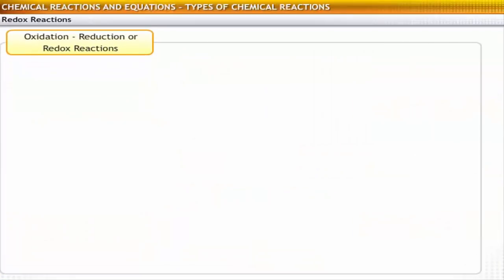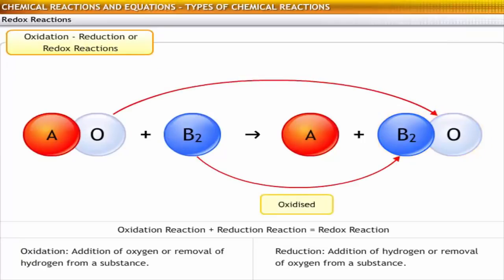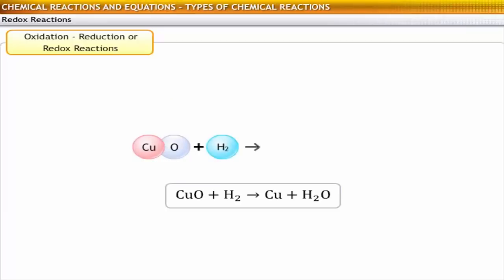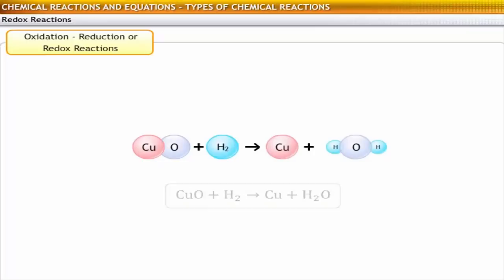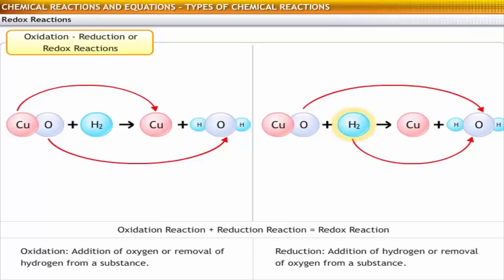Oxidation and reduction reactions occurring together are known as redox reactions. In a redox reaction, a substance that gains oxygen is said to have been oxidized, and the one that loses oxygen is said to have been reduced. For example, copper oxide on heating with hydrogen forms copper metal and water. In this reaction, the oxygen is removed from copper oxide — copper oxide is reduced to copper. On the other hand, hydrogen is changed into water, meaning oxygen is added to hydrogen. So hydrogen is oxidized to water. In this reaction, oxidation and reduction occur together. Therefore, it is a redox reaction.